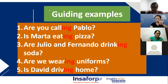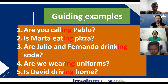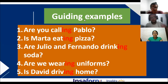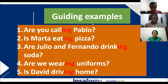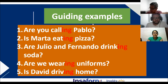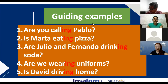We have five sentences and we need five volunteers. Ricardo, you are reading number one. Alfredo, number two. Beatriz, number three. Iris Vasquez, number four. Janet Enriquez, number five. Are you calling Pablo? Is Marta eating? Are Julio and Fernando drinking soda? Are we wearing uniforms? Is David driving home?